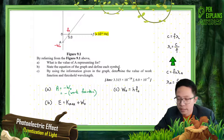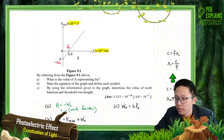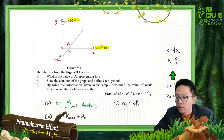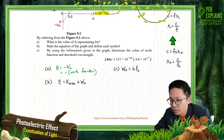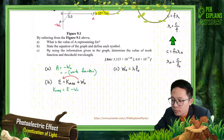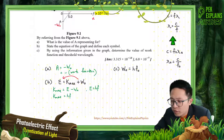State the equation of the graph and state each symbol. The equation of this graph is E equal to Kmax plus work function. So how to make it into the form where y is Kmax and x is F — rearrange your formula. Put Kmax at the front, and W0 goes to the other side, becoming E minus work function. We know that energy is the energy of the incident photon, which is equal to HF. So Kmax is equal to HF minus work function.